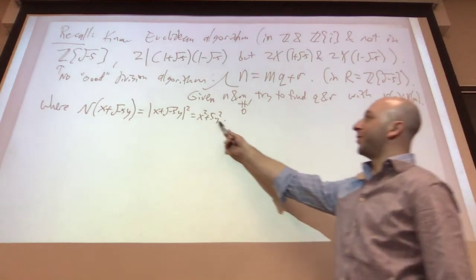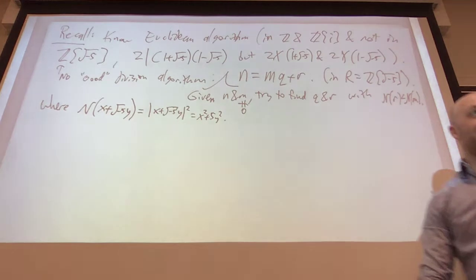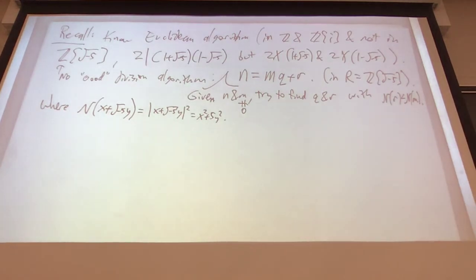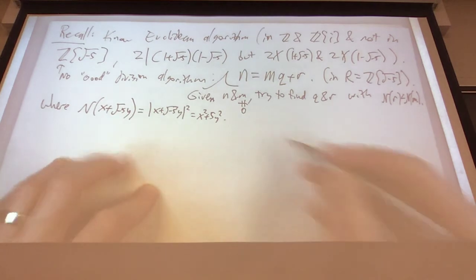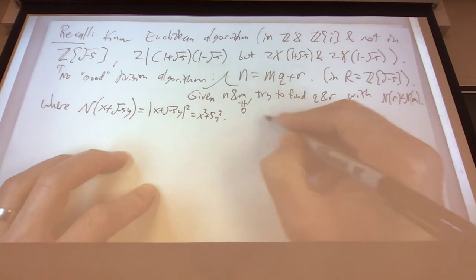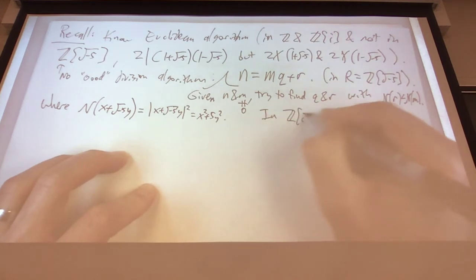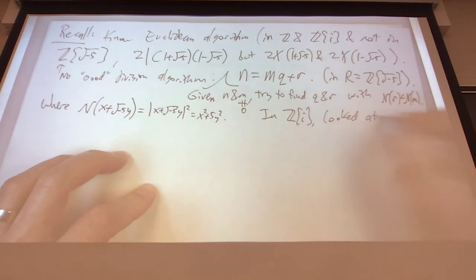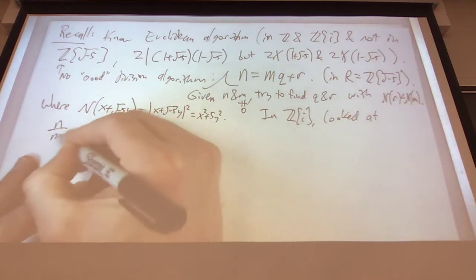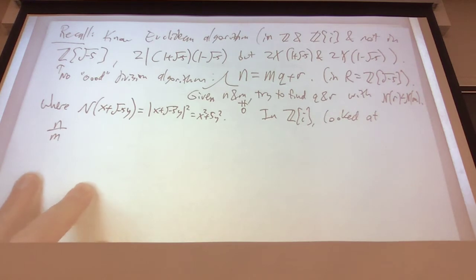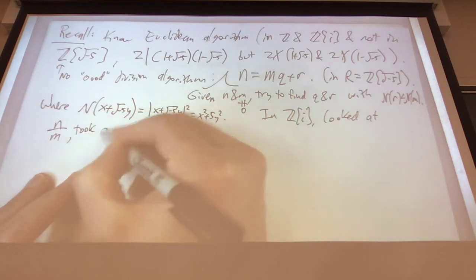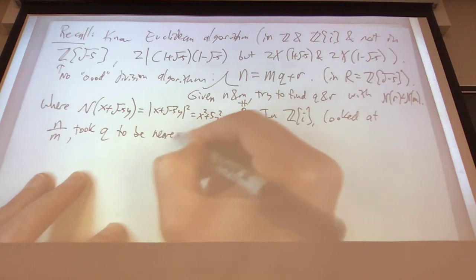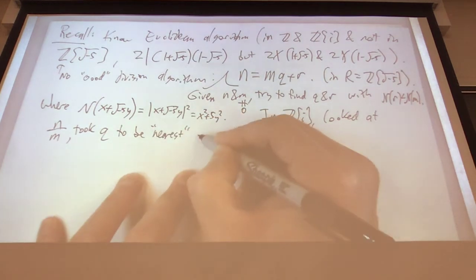That's a different quadratic form than the one we're looking to study — we're looking at sums of two squares. But this is a good cautionary tale about what can happen in other rings. So we're trying to get a strictly smaller value of this complex absolute value. In the Gaussian integers, we looked at N over M — that's just some complex number — and took Q to be the nearest element of R.